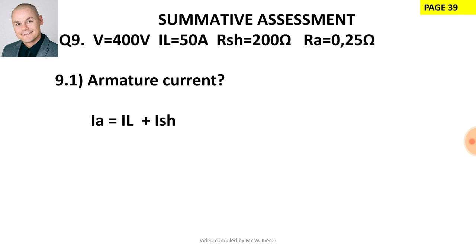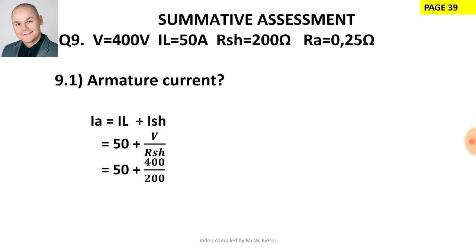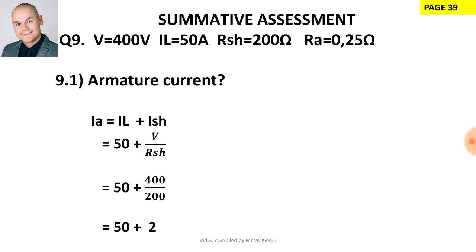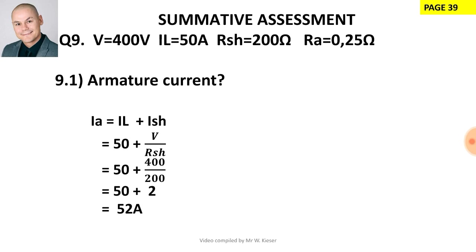Question 9: A 400-volt shunt-wound generator delivers 50 amperes. The shunt field resistance is 200 ohms and the armature resistance is 0.25 ohms. Part 1: calculate the armature current. For a shunt-wound generator it is positive. Armature current = supply current + shunt current. Supply current = 50 A; shunt current = 400 / 200 = 2 A. Therefore, armature current = 50 + 2 = 52 A.